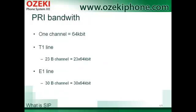The bandwidth of one ISDN channel is 64 Kbps. This way, a PRI user on a T1 line can have up to 1.5 Mbps of service, or up to 2.048 Mbps service on an E1 line.